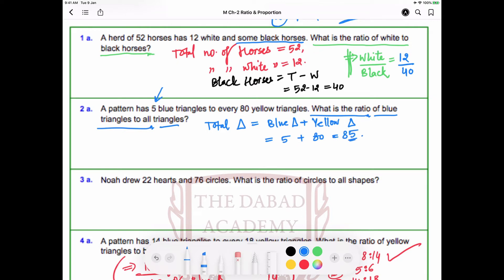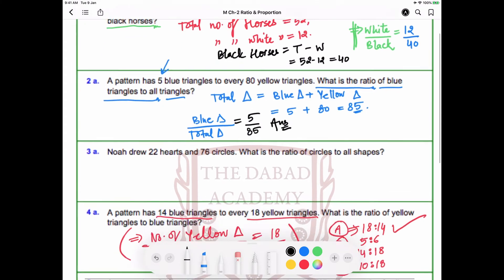Since the ratio is the representation in the form of a by b, we would write blue triangles divided by total triangles. The answer is: blue triangles are 5 and total number of triangles are 85. It was quite easy. We won't do the simplification now, although it can be further solved.